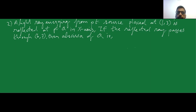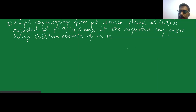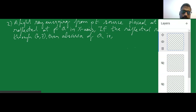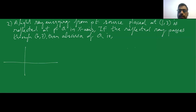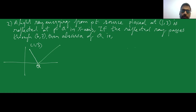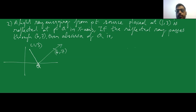Abscissa is nothing but the x-coordinate. Let's draw the diagram to understand the problem. The light source is at (1, 3). It is reflected at point Q on the x-axis. After reflection, it goes to the point (6, 7). I have to find the x-coordinate of Q. Obviously the y-coordinate of Q is 0, as it lies on the x-axis.